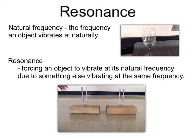So there we're having the glass vibrate at its natural frequency. When we force an object to vibrate at its natural frequency, we call that resonance. So that's forcing an object to vibrate at its natural frequency due to something else vibrating at the same frequency. So as you took these two tuning forks here in class, as both were the same frequency, as you rang one tuning fork, that caused the other tuning fork to vibrate at its frequency due to this tuning fork vibrating at the same frequency.